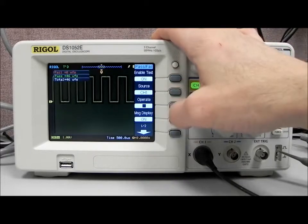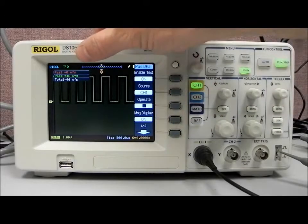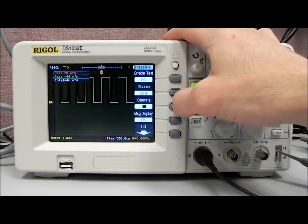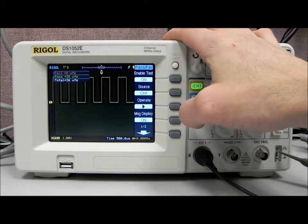And then we can operate that. We can pick the source, and we can turn the message display on, which is going to give us a number of fails, number of passes, and then the total number of waveforms. So we can operate that, and you can see that'll increment.